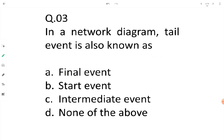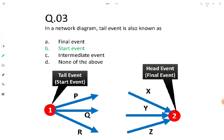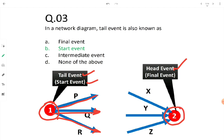Let's move to question number 3. In a network diagram, a tail event is known as: final event, start event, intermediate event, or none of the above. When we say an event is a tail event, look for an event which is giving rise to some activities. A tail event is also called the start event, from which activities are arising and starting. The opposite is the head event — head event is the final event toward which activities are progressing. Therefore, tail event is also known as a start event.